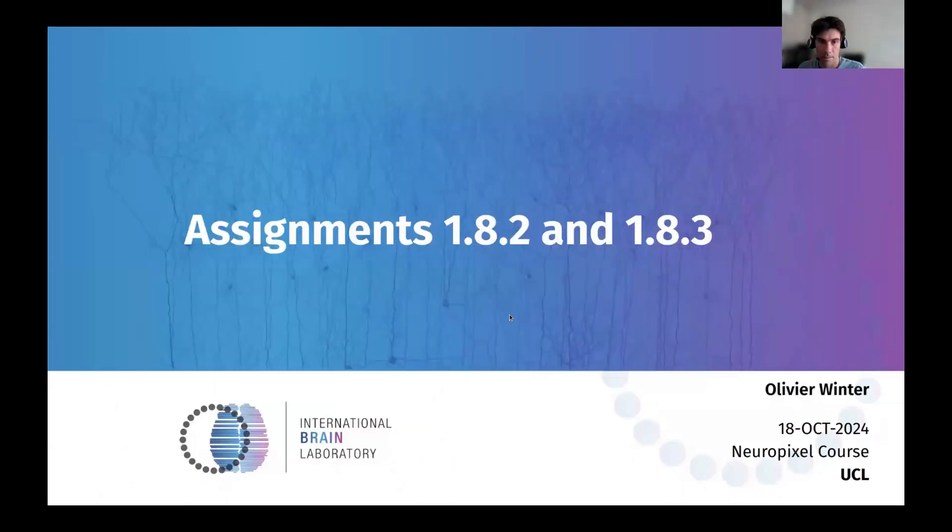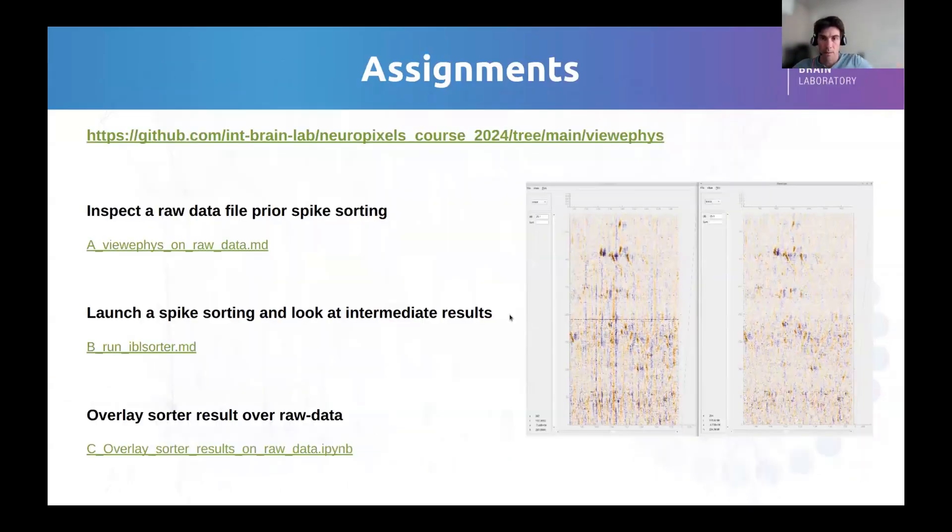Quickly, the assignments. The assignments are in three parts. The idea is to look at one of our data sets as if you were going to run spike sorting on it and try to get a handle on what's in the raw data before we run the spike sorting.